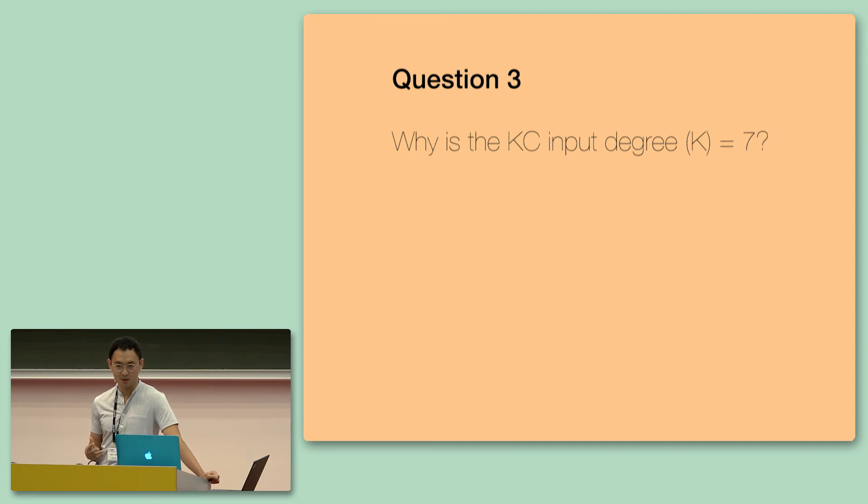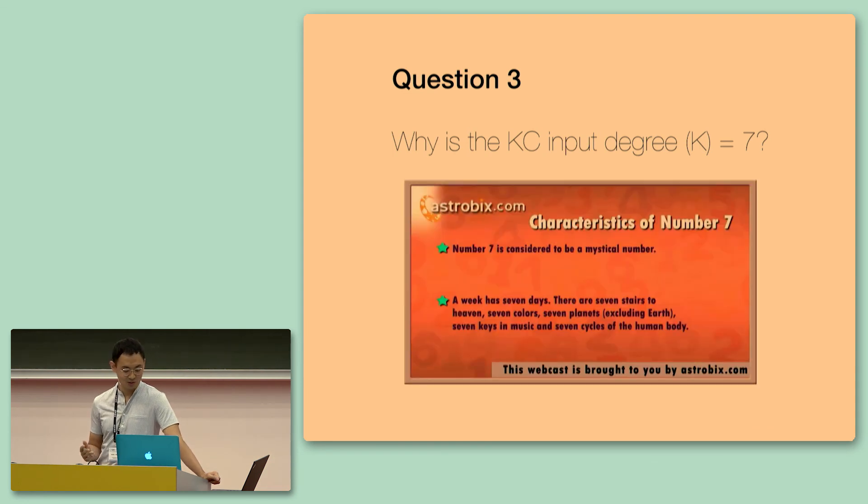And a harder question to answer is why is the Kenyon cell input degree 7? I'm going to define input degree as just K for simplicity here. So, we were initially quite confused over why, and we sought out the internet for answers initially. And we came across this website that tells you the meaning of numbers. Why 7? And amazingly, a week has 7 days. There are 7 stairs to heaven, depending on what religion you're in. There are 7 colors, and there are 7 planets, 7 keys of music. So, to us, it seems like it's a very important number. How did 7 evolve and emerge in our networks and in biology? What is the reason to this?